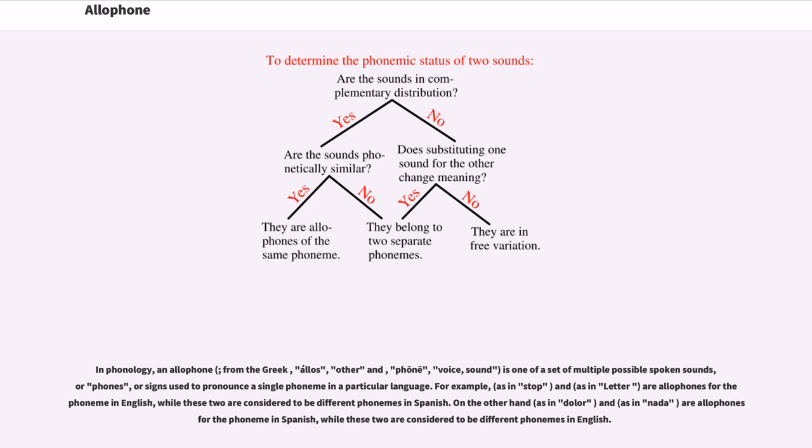In phonology, an allophone, from the Greek allos, other, and phone, voice, sound, is one of a set of multiple possible spoken sounds, or phones.